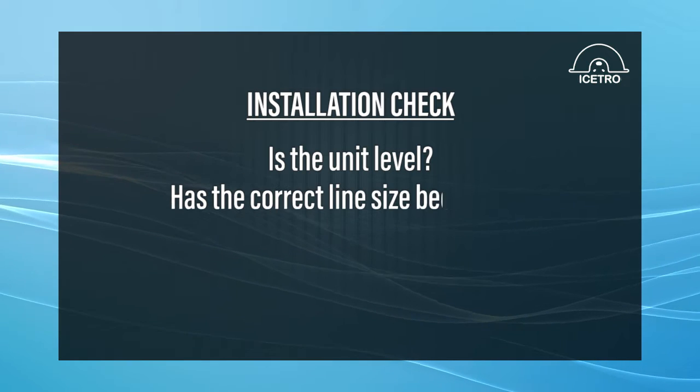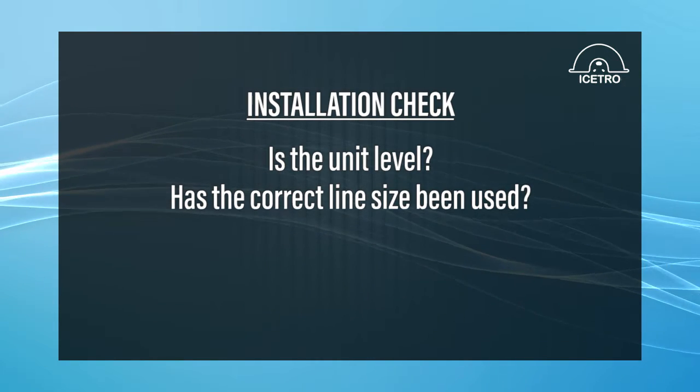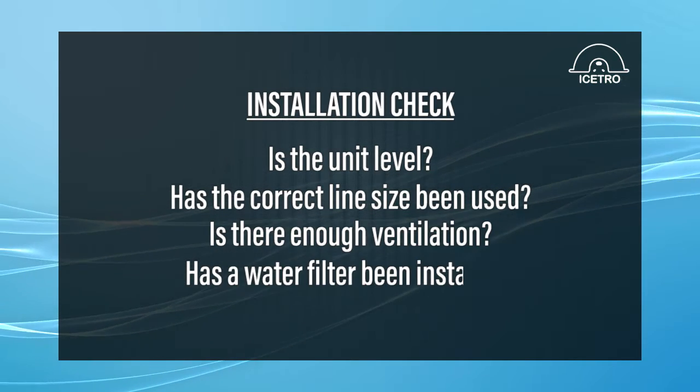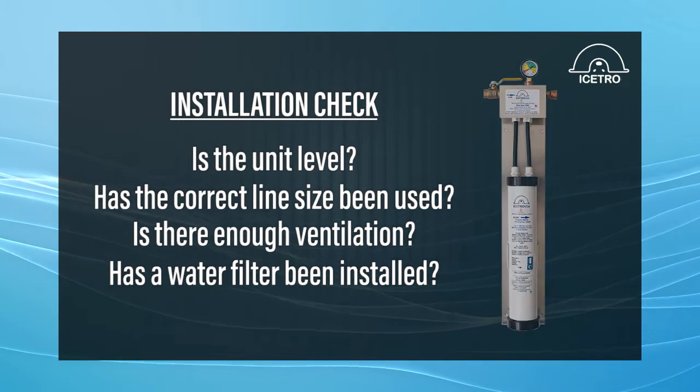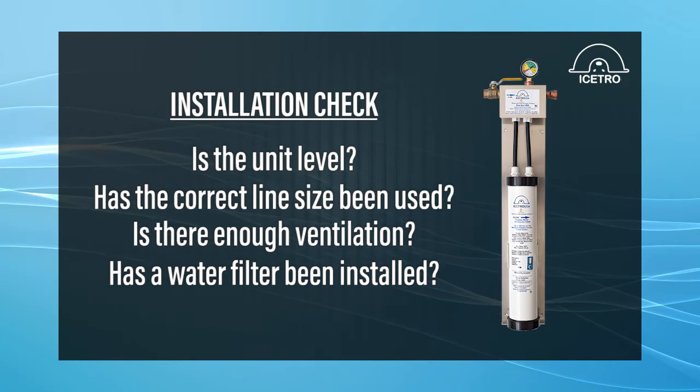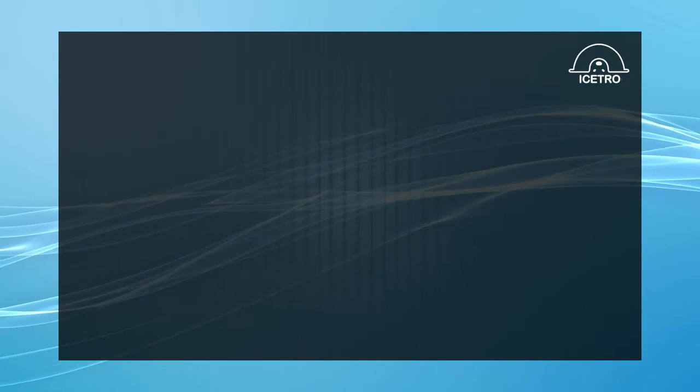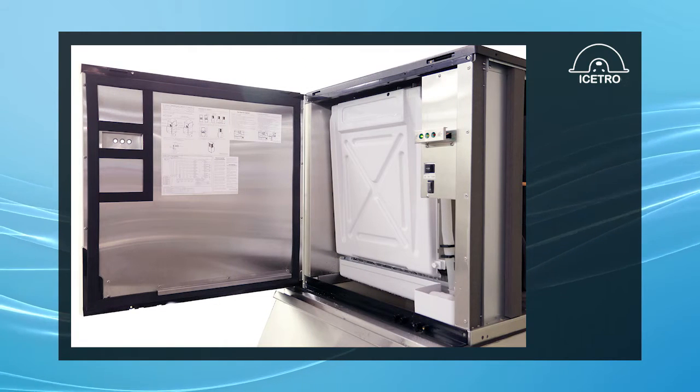Has the correct line size been used for both water and drains? Is there enough ventilation? Has a water filter been installed? We recommend our exclusive Citrine Eco Ice Filtration. An installation user manual is provided with each machine. A sequence of operation label is provided inside the machine.